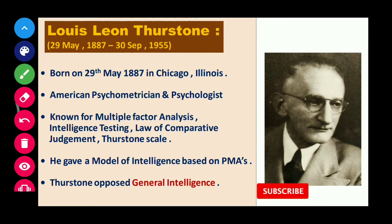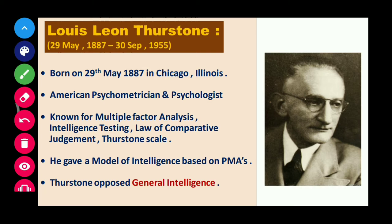Before starting the theory, let's know something about Louis Thurstone. He was born on 29th May 1887 in Chicago. He was an American psychologist, best known for multiple factor analysis, intelligence testing, law of comparative judgment, and the Thurstone scale.